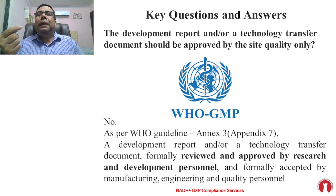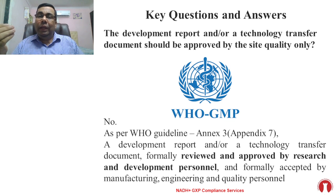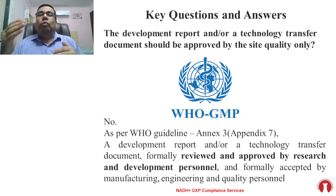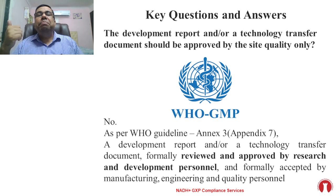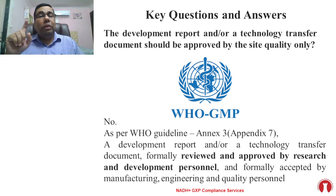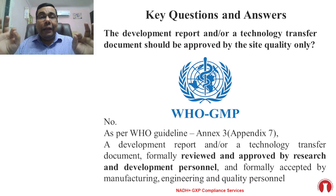The product development report and technology transfer document should be approved by R&D personnel first. Additional approval by site quality is fine, but the primary approval must be from R&D. Furthermore, when the technology transfer document or PDR is shared to the manufacturing site, signatures from the manufacturing person, engineering person, and quality person are all required. Many product development reports and technology transfer documents are missing engineering signatures — this is an important point per WHO GMP expectations.